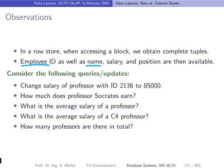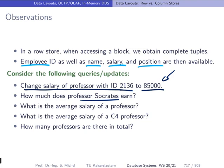Consider the following queries. Query 1 wants to change the salary of the professor with ID 2136 to 85000. You go to the block corresponding to this entry, read the block, and then you have access to the entire information. You can see that the ID is indeed 2136, and then you can update the salary information within that tuple. If you have a query that asks for the salary of professor Socrates, you retrieve the block where Socrates' tuple is contained — by the name Socrates — and when you find the tuple, you already know the salary because it's contained in the tuple.